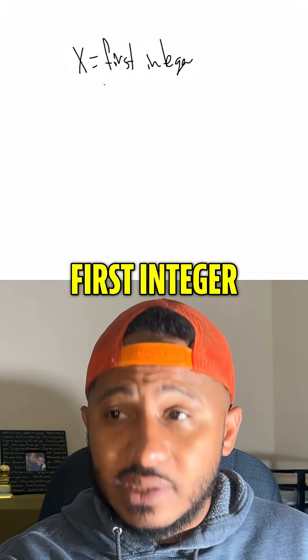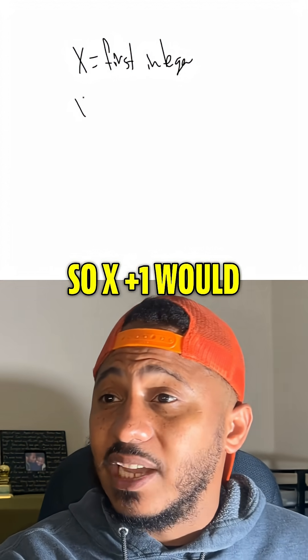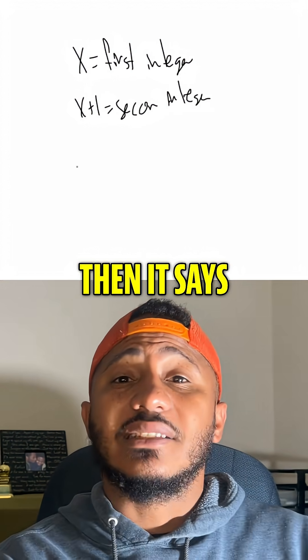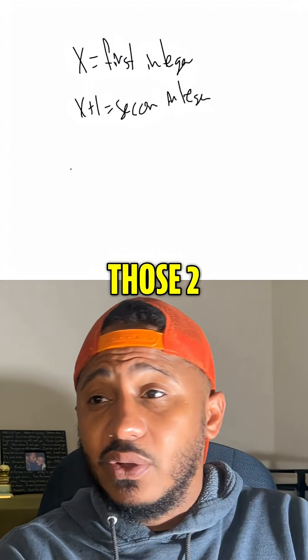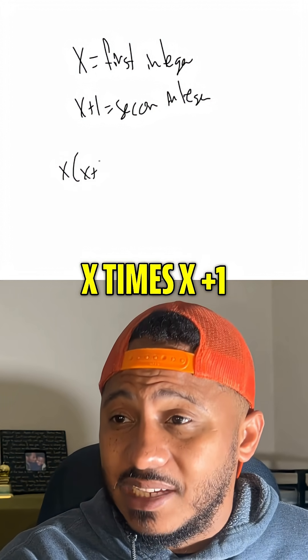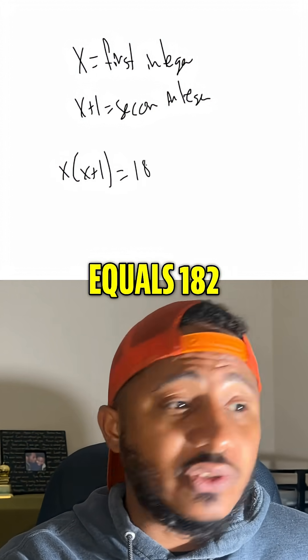So let x be the first integer, and since it says consecutive integer, x plus 1 would be the second integer. Then it says the product of those two, meaning if I multiply x times x plus 1, then it equals 182.